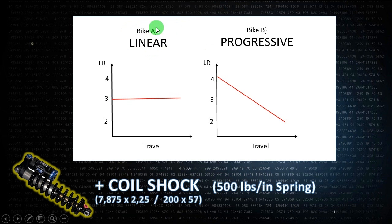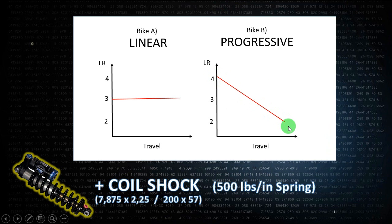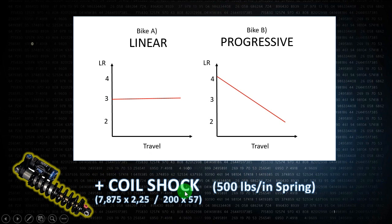Bike A is a linear bike and it has a constant leverage ratio along the travel. Bike B is a progressive bike — it starts with a ratio of four and decreases to a ratio of two. So this is an extremely progressive bike, but both bikes on average have a leverage ratio of three.